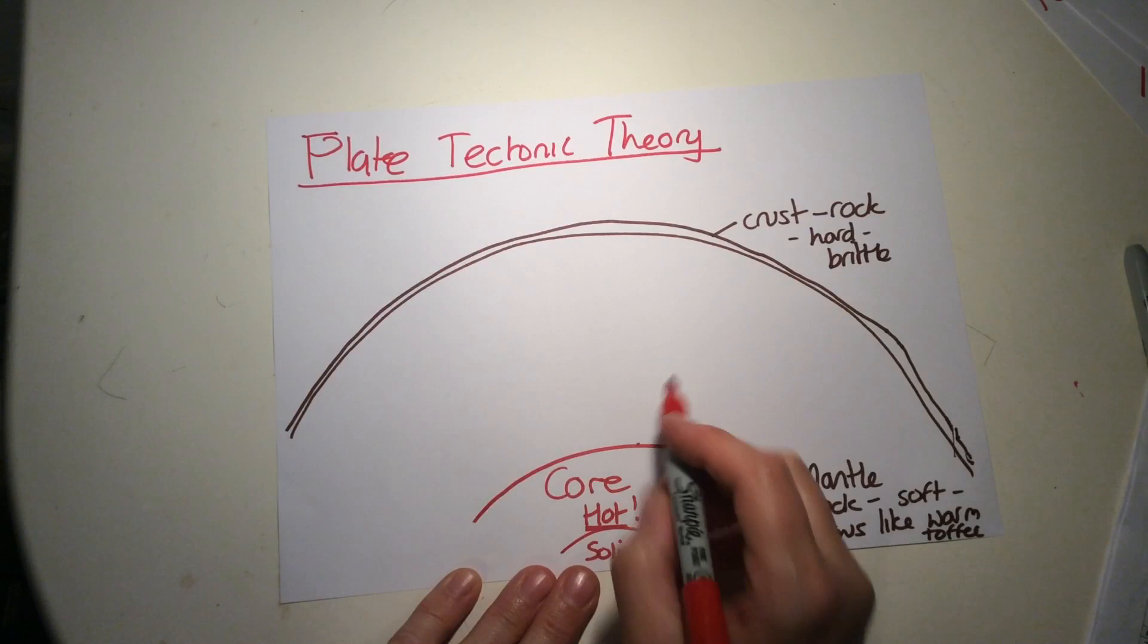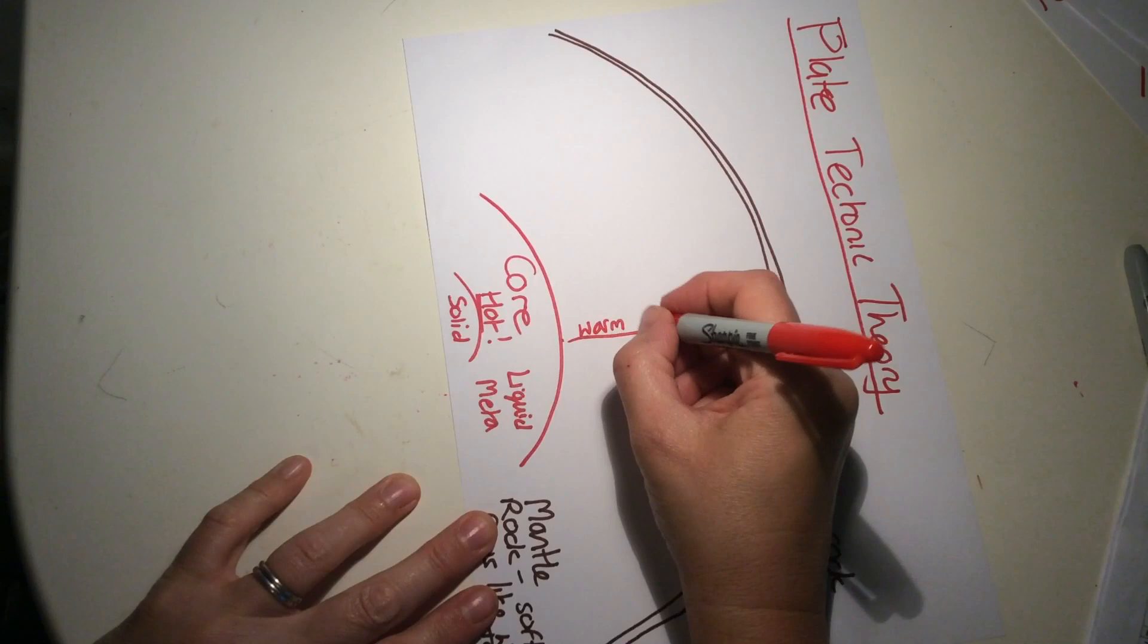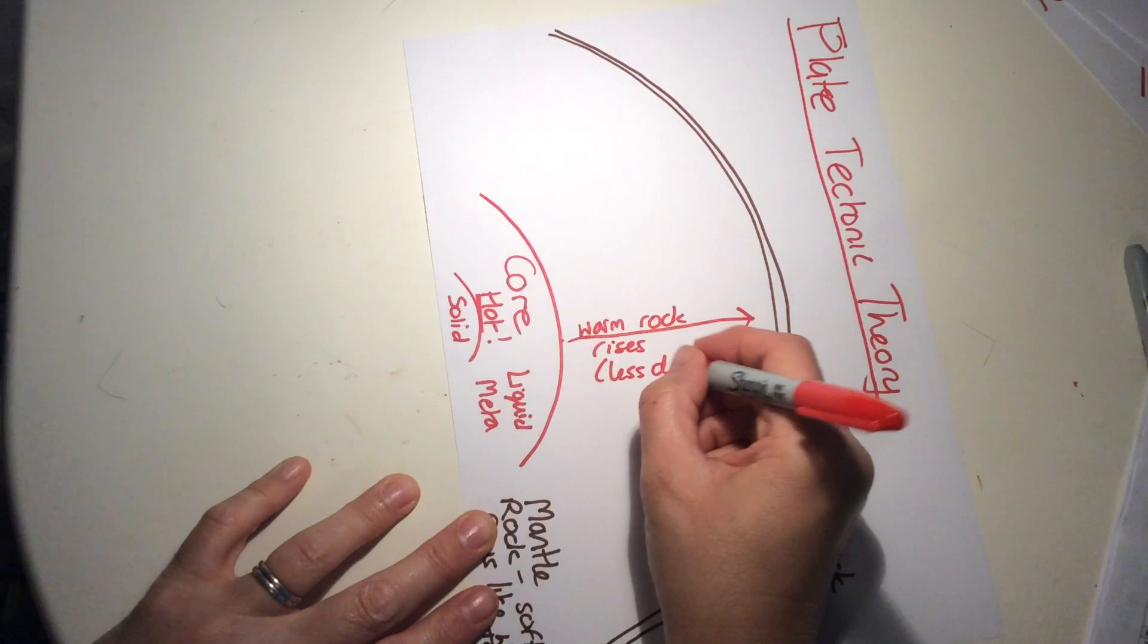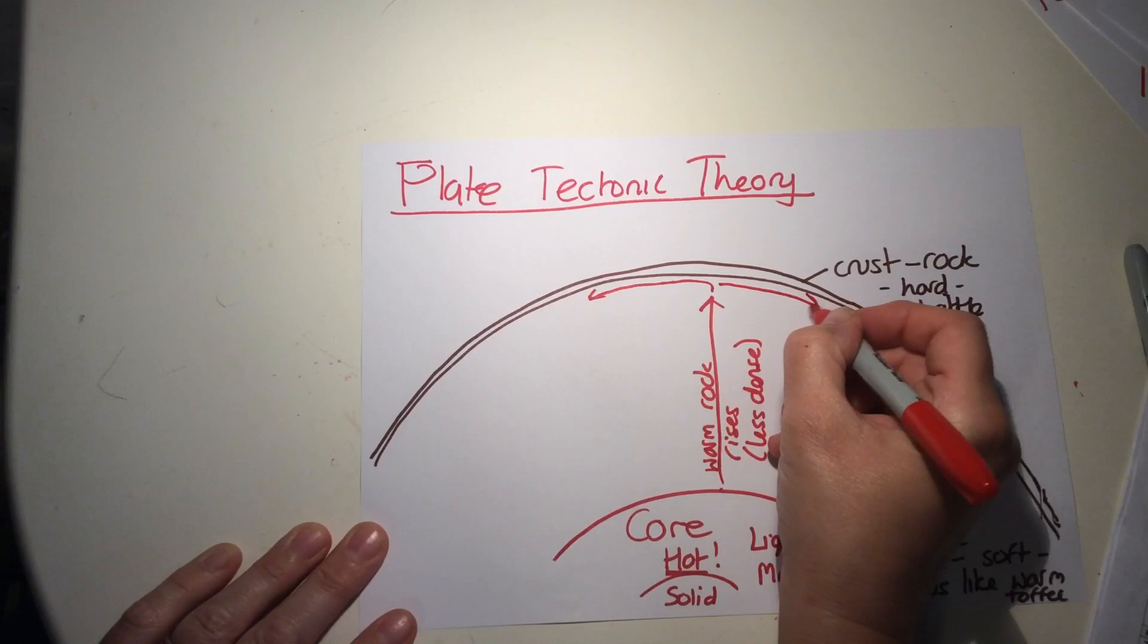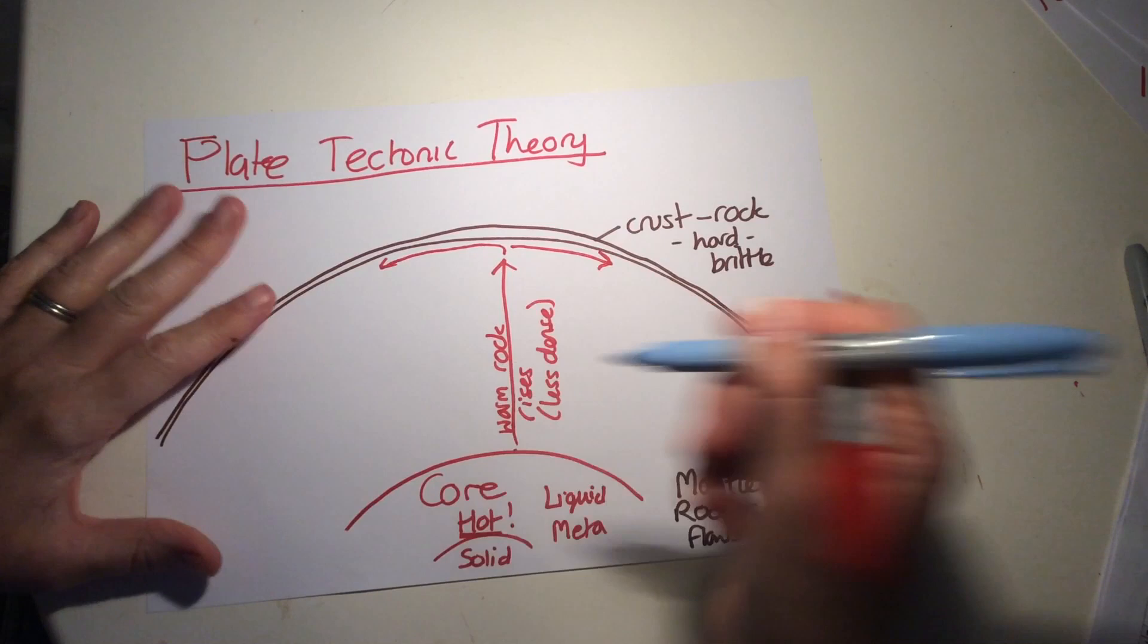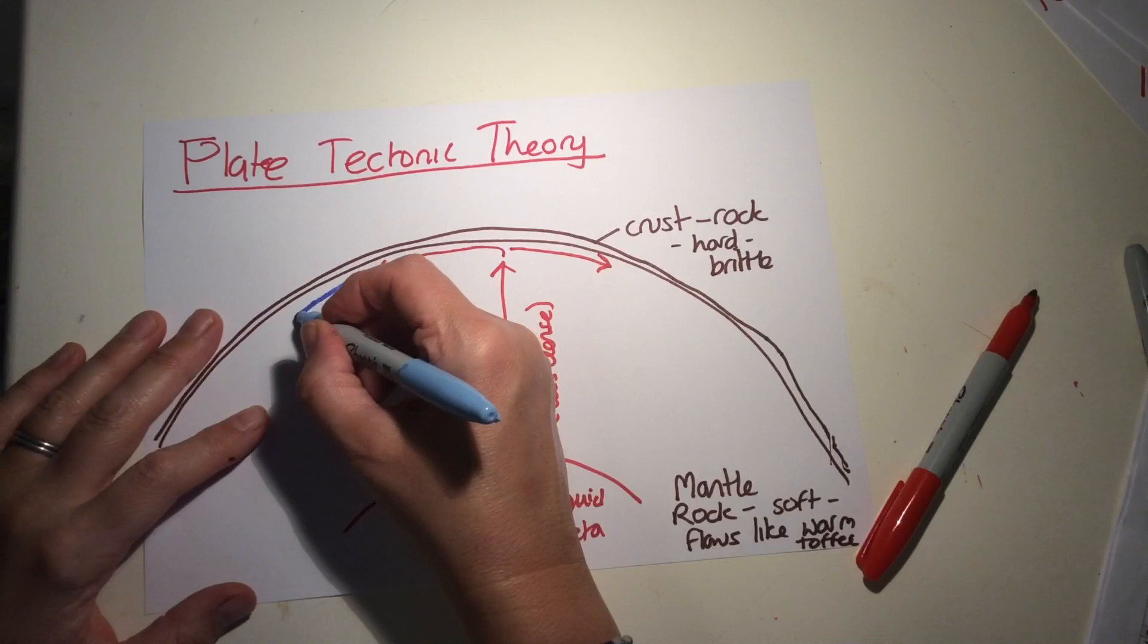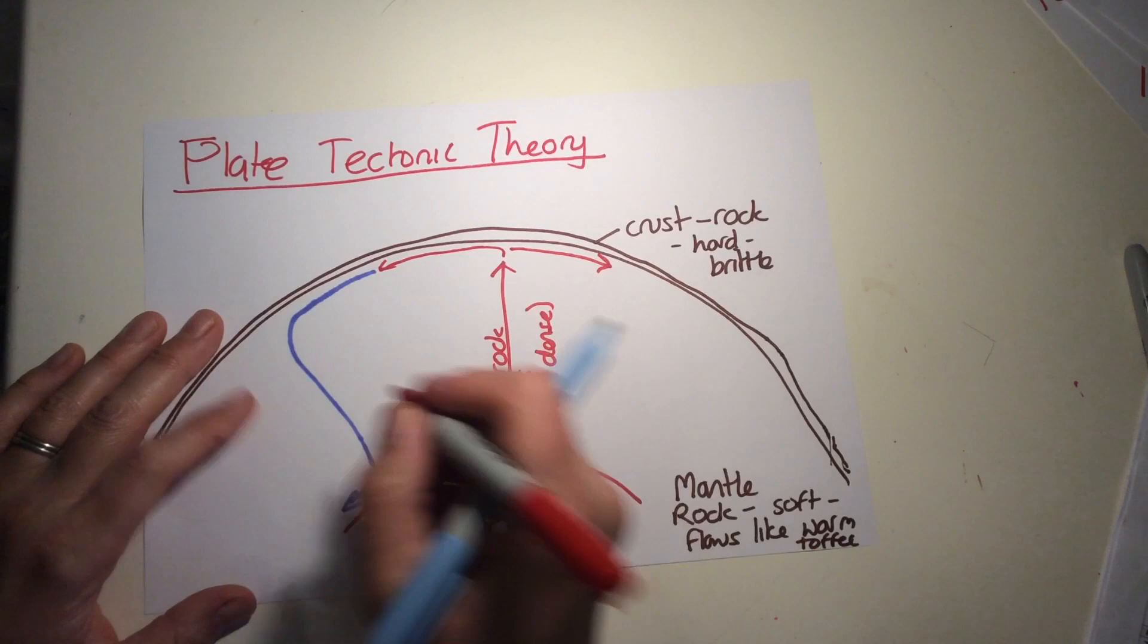Next to the core, mantle rock warms up. Maybe this area here warms up and the rock expands. It becomes less dense and it starts to rise. So here, warm or hot rock rises—I'm going to put 'less dense' there but you don't have to include that. Up it rises, and at the top it's forced to each side because of the crust. As it's away from the Earth's core, it starts to cool.